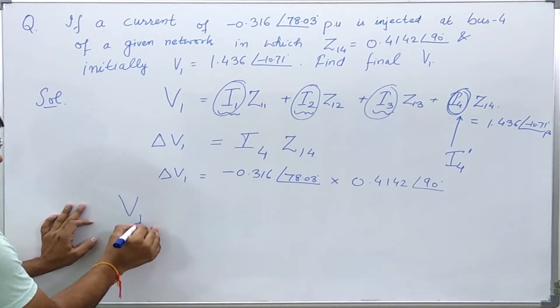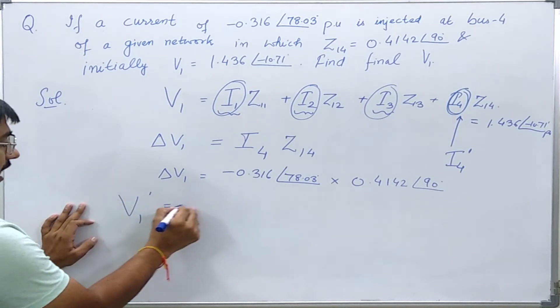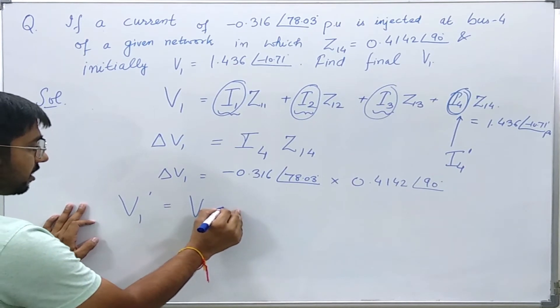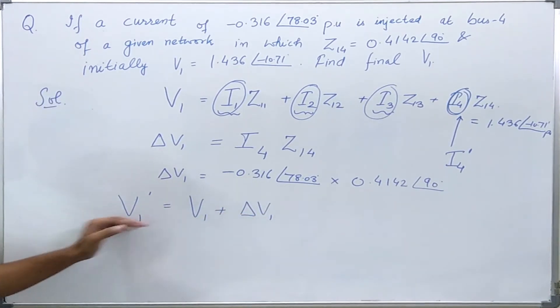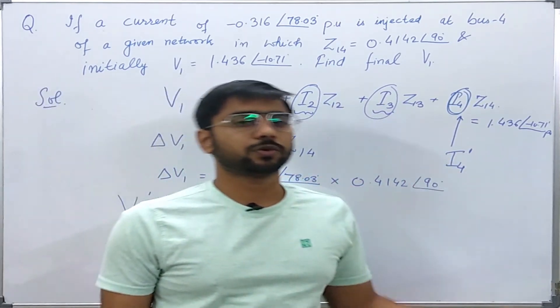The final value, let us call it V1 prime, can be written as V1 the original one and the change in the value of V1 due to the given injected current source.